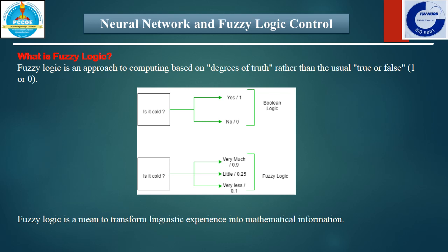In a Boolean system, truth value 1 represents absolute truth and 0 represents absolute false. But in the fuzzy system, there is no strict logic for absolute truth or absolute false values. In fuzzy logic, there is an intermediate value to represent what is partially true or partially false.